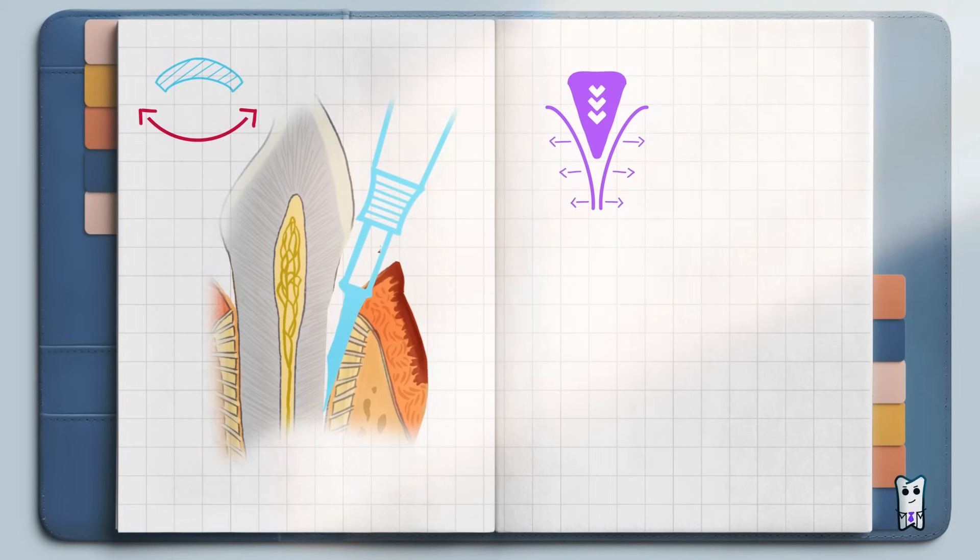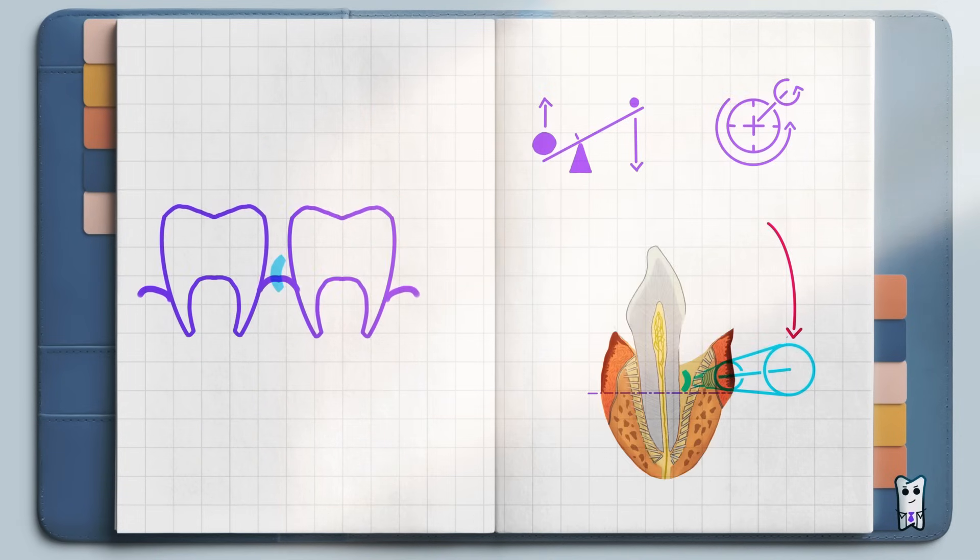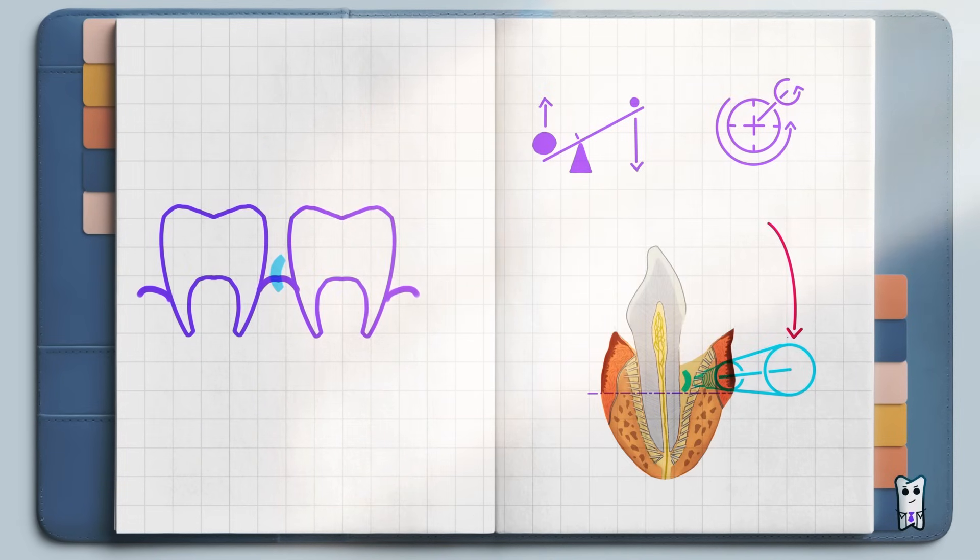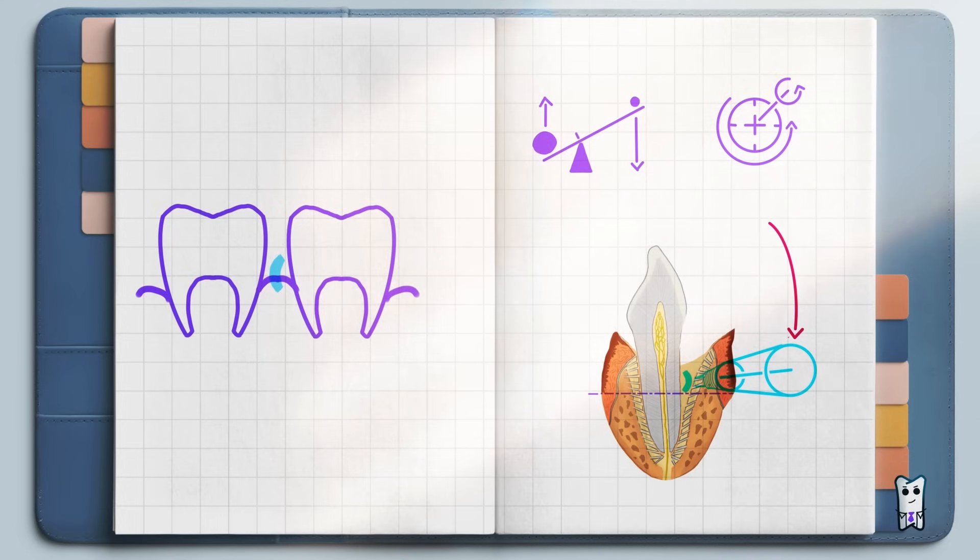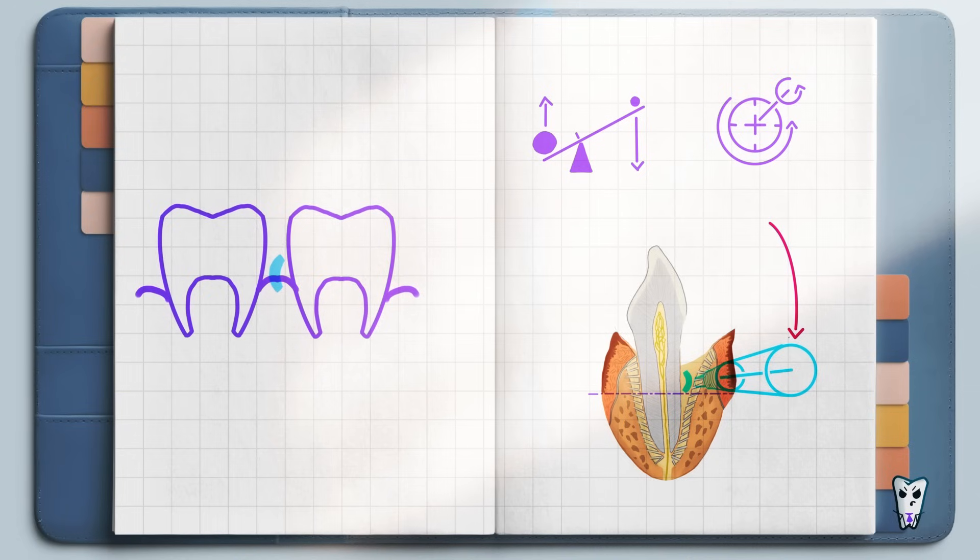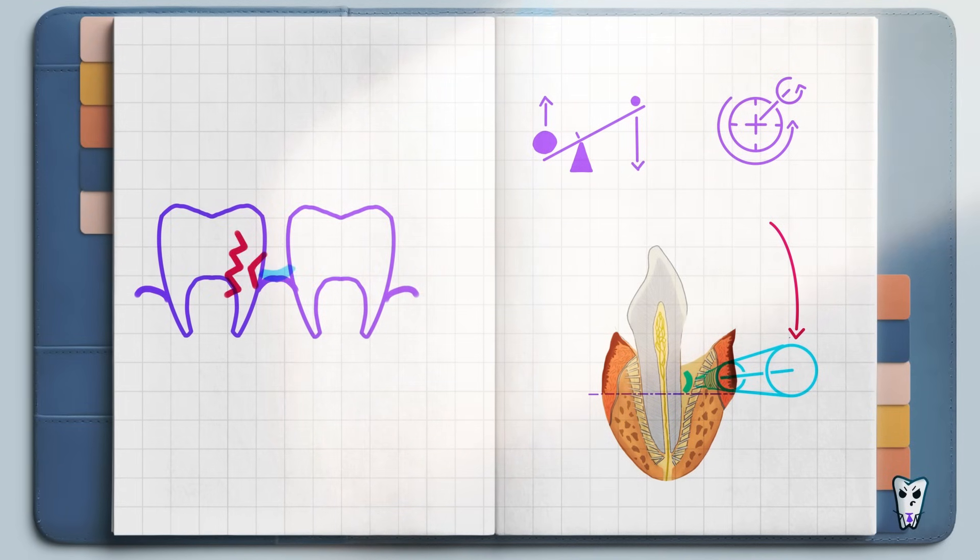Short roots can be extracted only with the wedge principle. With longer roots, it mainly serves to place the elevator in the correct position and depth. True luxation is done with the second or third principle. Neighboring tooth should not be used as fulcrum because it can be luxated or fractured.